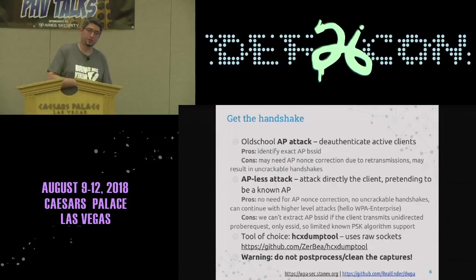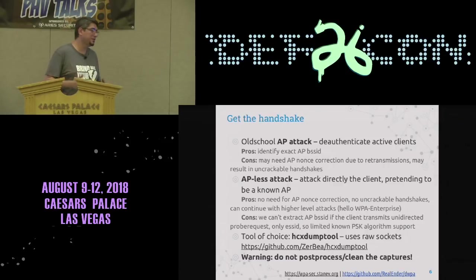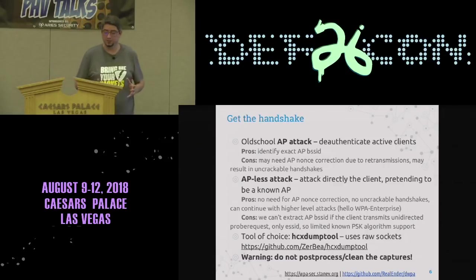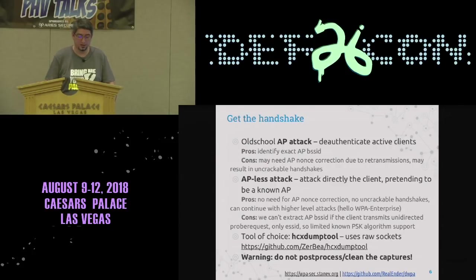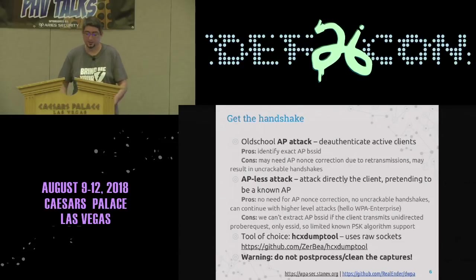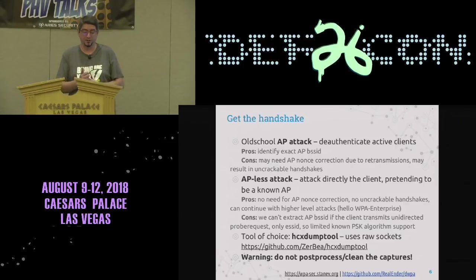Back in the day, we used the old school AP attack to de-authenticate active clients and get the handshake. This is very useful because we can extract the AP BSSID. But in crowded areas or with bad connections and transmissions, we may in some places have to apply nonce correction.